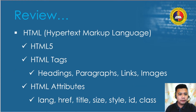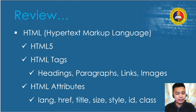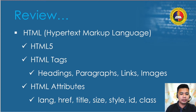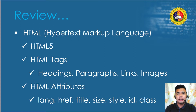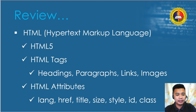To review, last time we discussed HTML or Hypertext Markup Language and HTML5, which is the latest version. We talked about some HTML tags — particularly headings, paragraphs, links, and images. We also talked about HTML attributes including lang, href, title, size, style, id, and class. There are many HTML tags and attributes we couldn't cover in one lesson, so I asked you to do an advanced study.